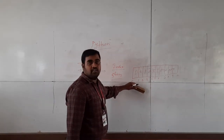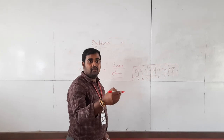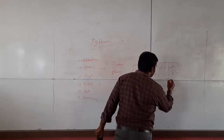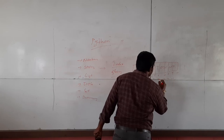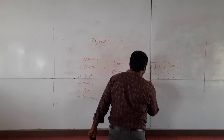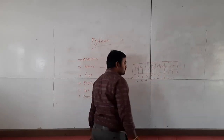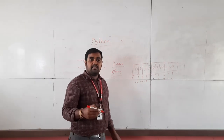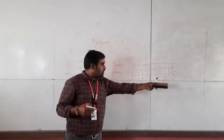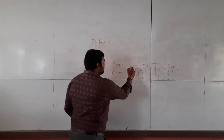Index starts from zero. Suppose if you want to access a string from the reverse order, there is negative indexing as well — that is minus one, minus two, minus three, minus four, minus six, minus seven, minus eight, minus nine, minus ten. If you want to access the string in reverse order, you use minus one, minus two, minus three, and so on. This is the indexing concept.